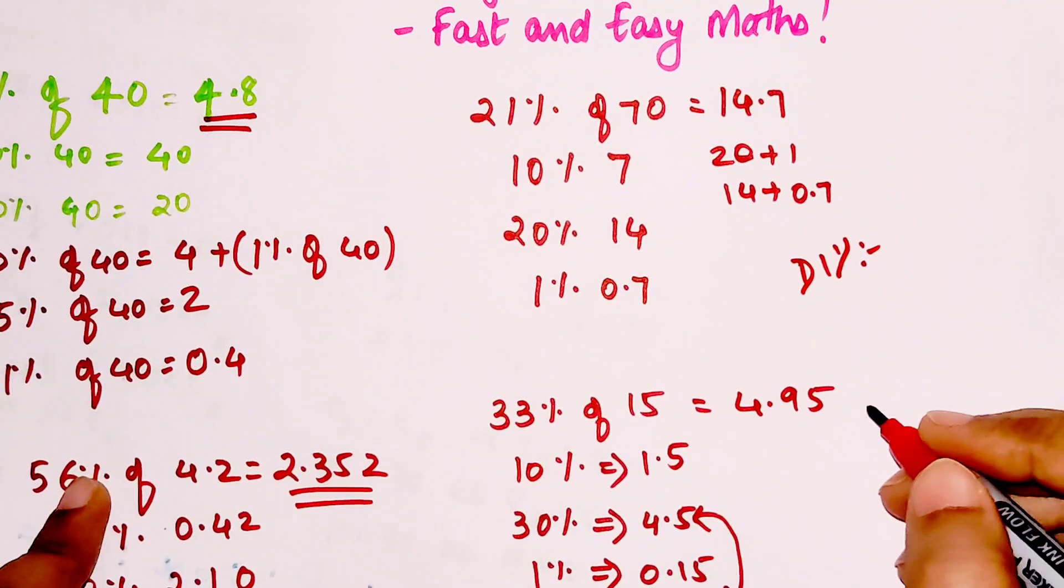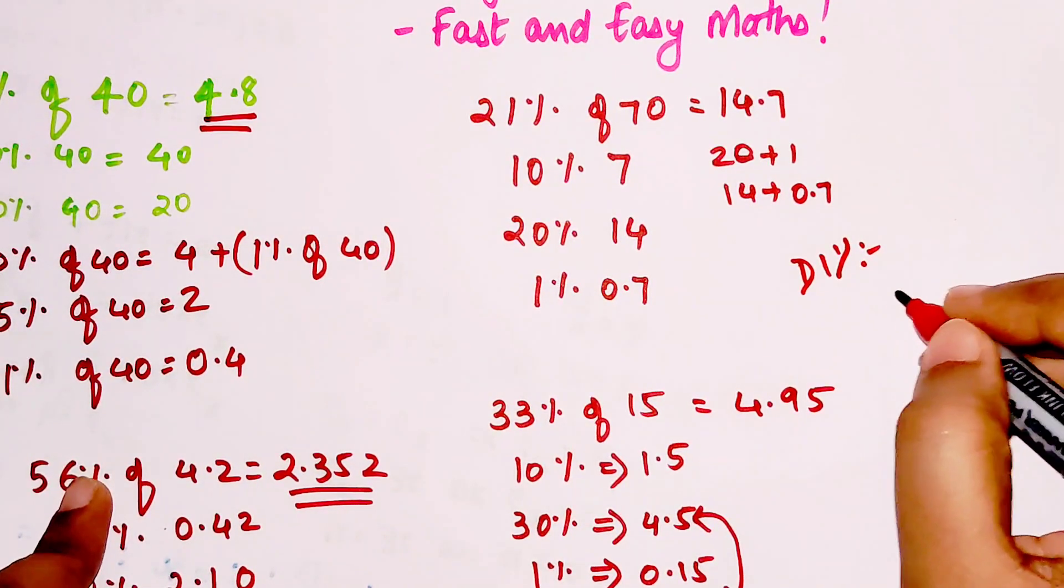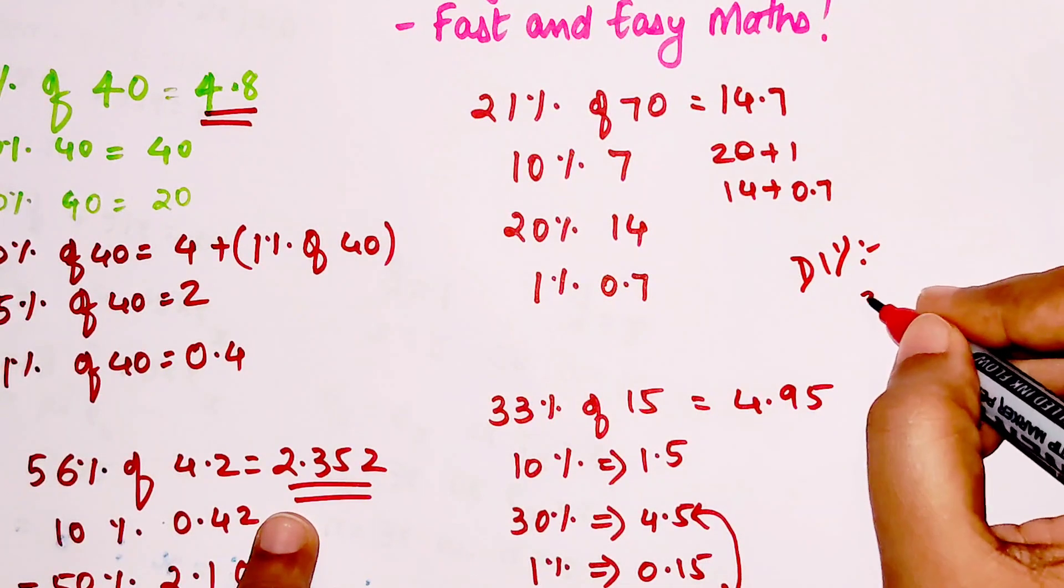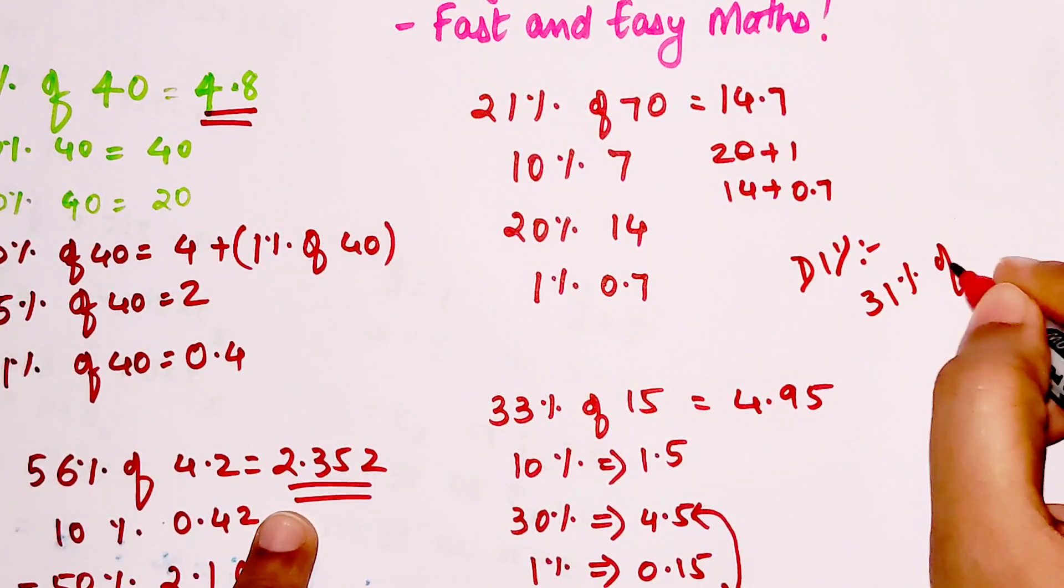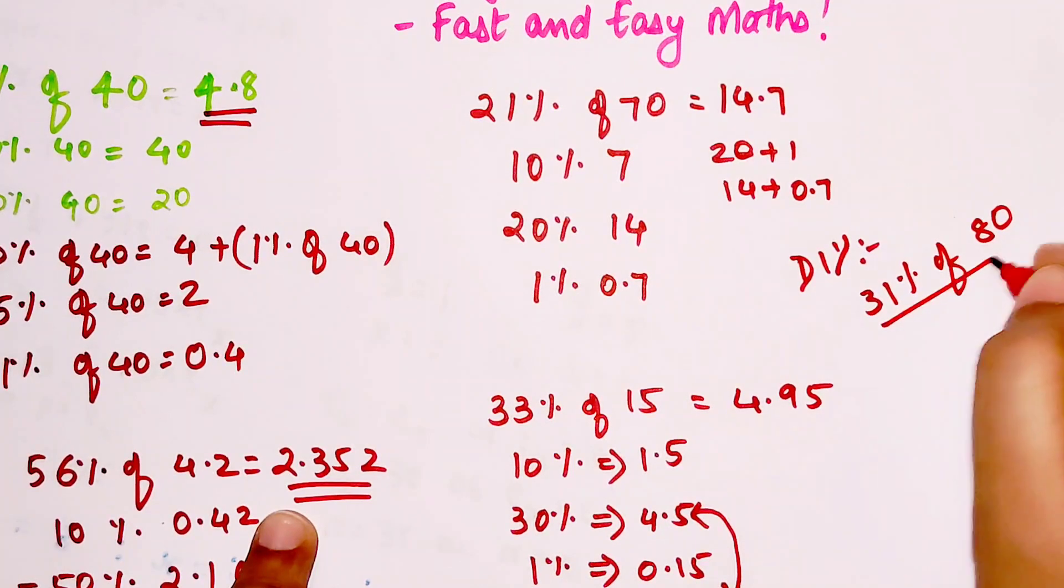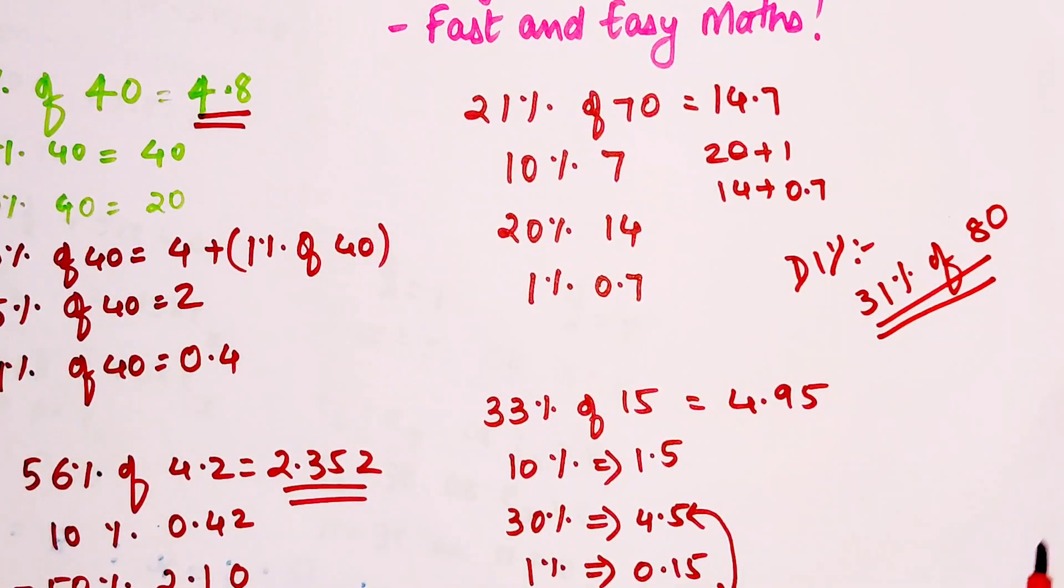So now coming to your DIY. The DIY question is, tell me what is 31% of 80. Do let me know your answers in the comment section. I will definitely let you know whether you are right or wrong by giving a heart to your answer. In case you are wrong then I will let you know in the comments itself. So that's it for now, I will see you in the next video.